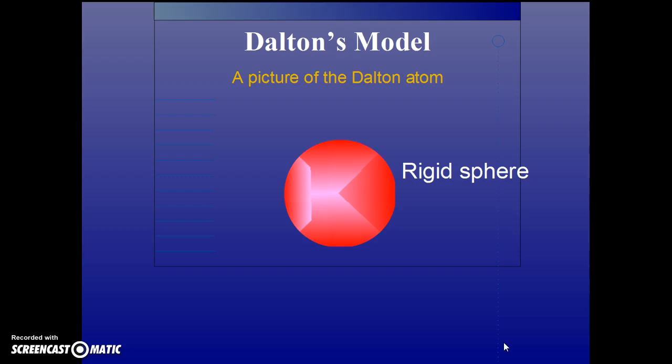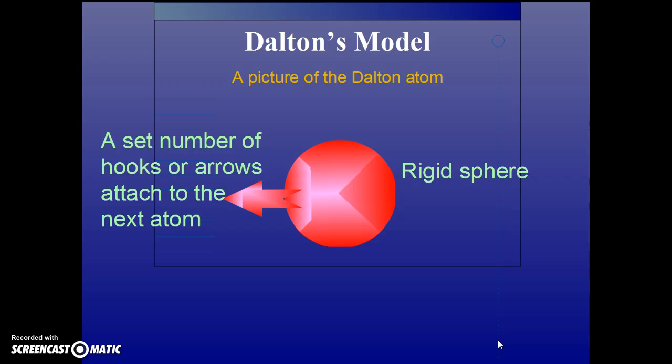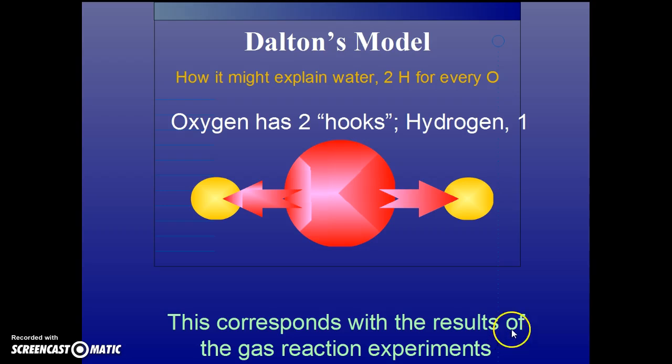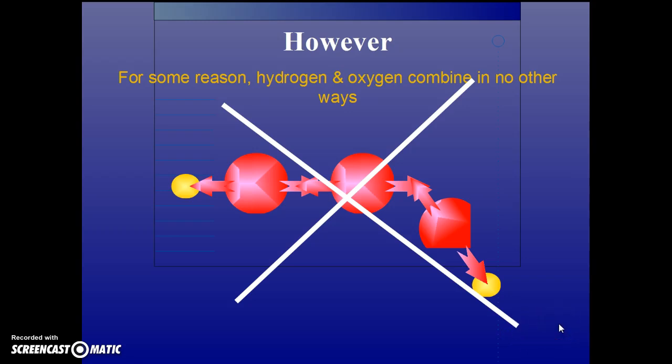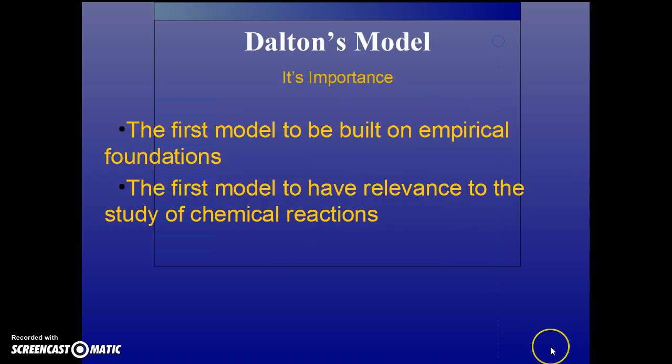Dalton's model is easy to draw - just draw a rigid sphere. We can imagine that a set number of hooks or arrows attach to the next atom. He didn't know how atoms attach to each other, but he knew they combine in definite ways. If we postulate that oxygen has two hooks and hydrogen has one, then that gives us our H2O formula for water. We can also explain hydrogen peroxide - if oxygen is hooked together with another oxygen, then each oxygen has one more hook to provide for a hydrogen, H2O2. However, H2O3 does not exist and cannot be found anywhere.